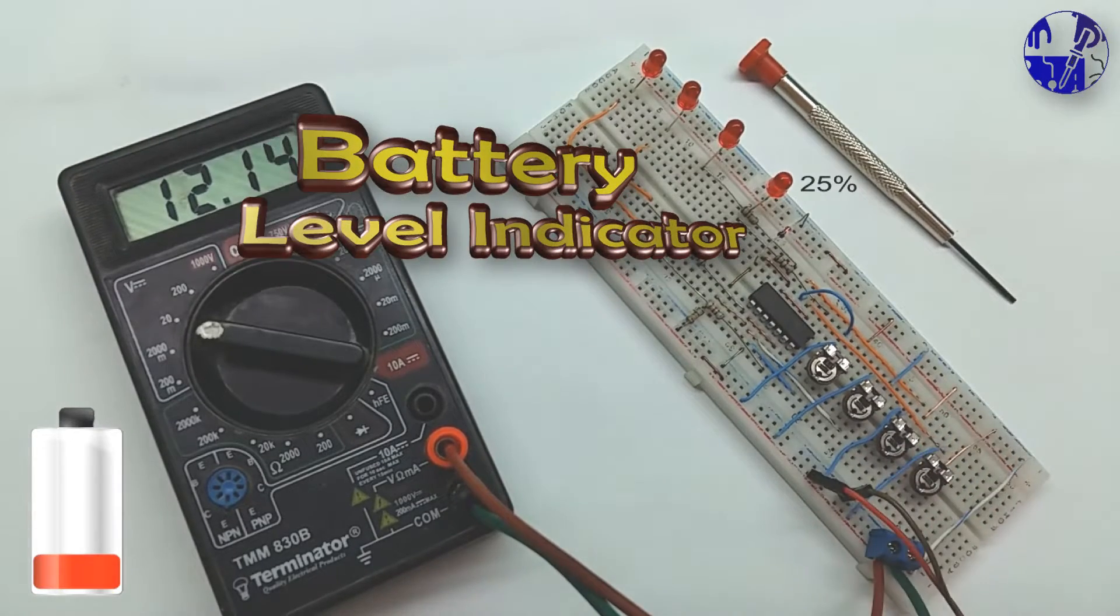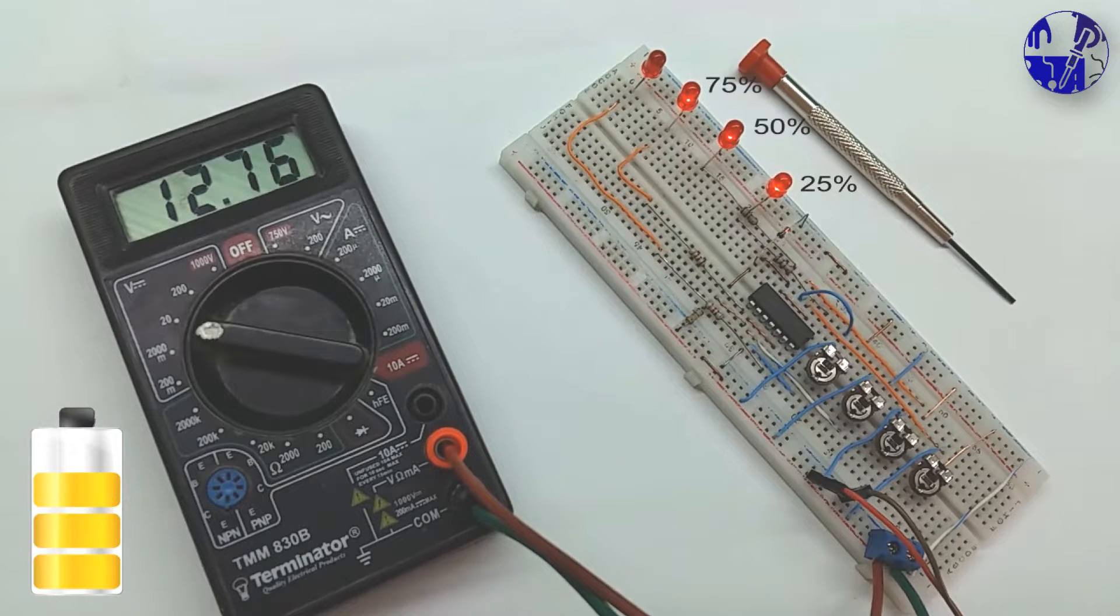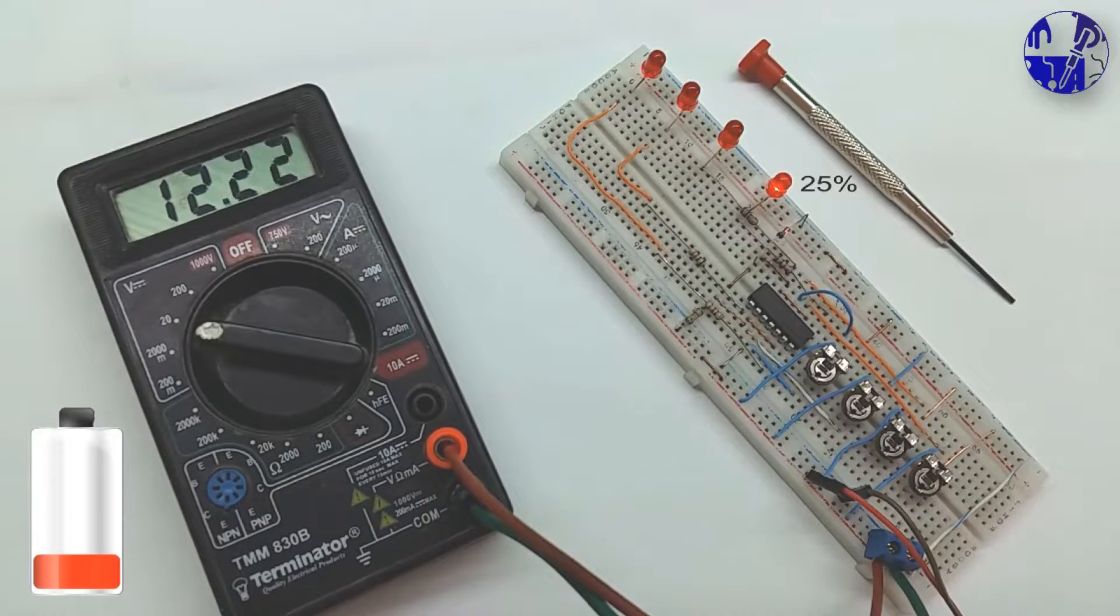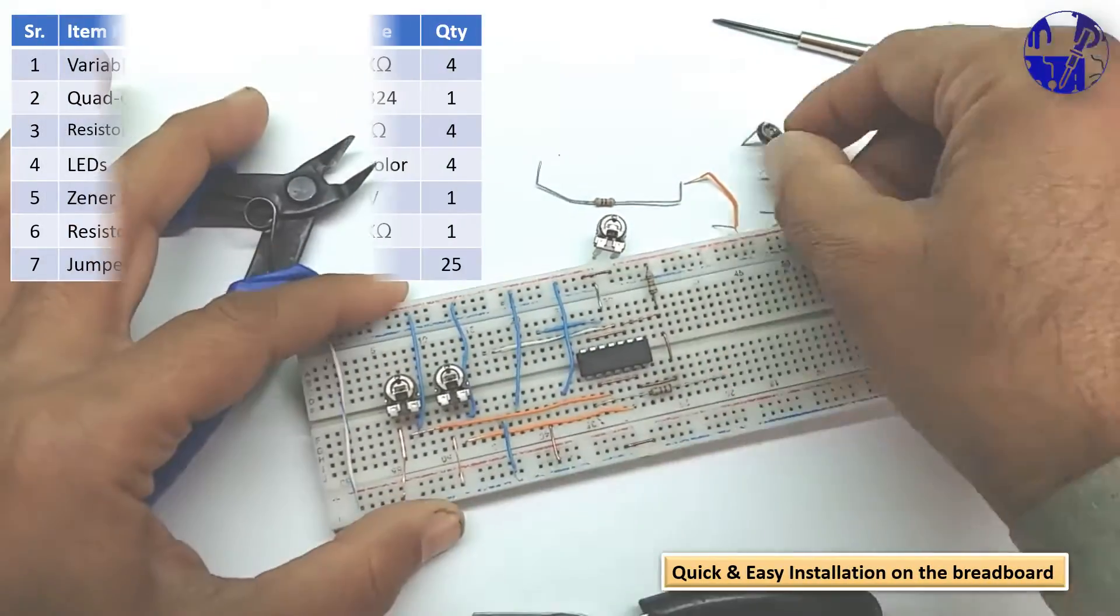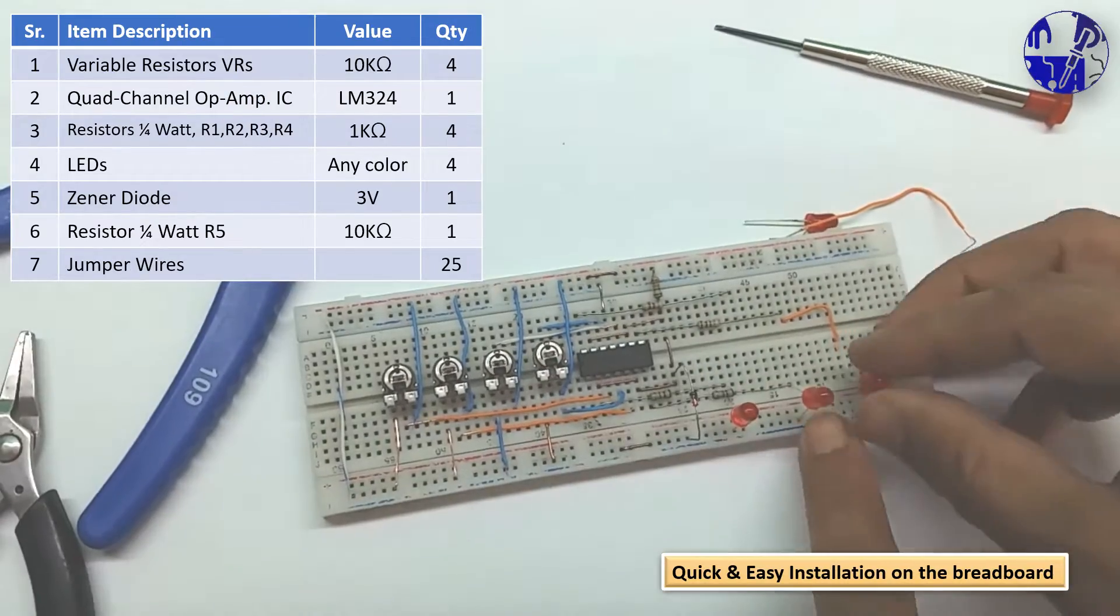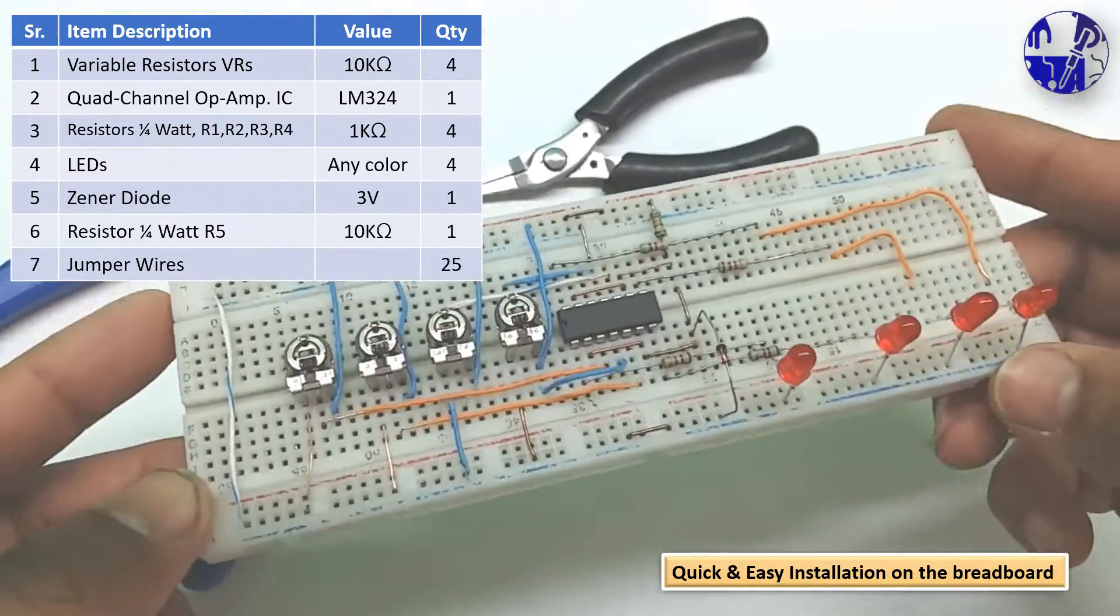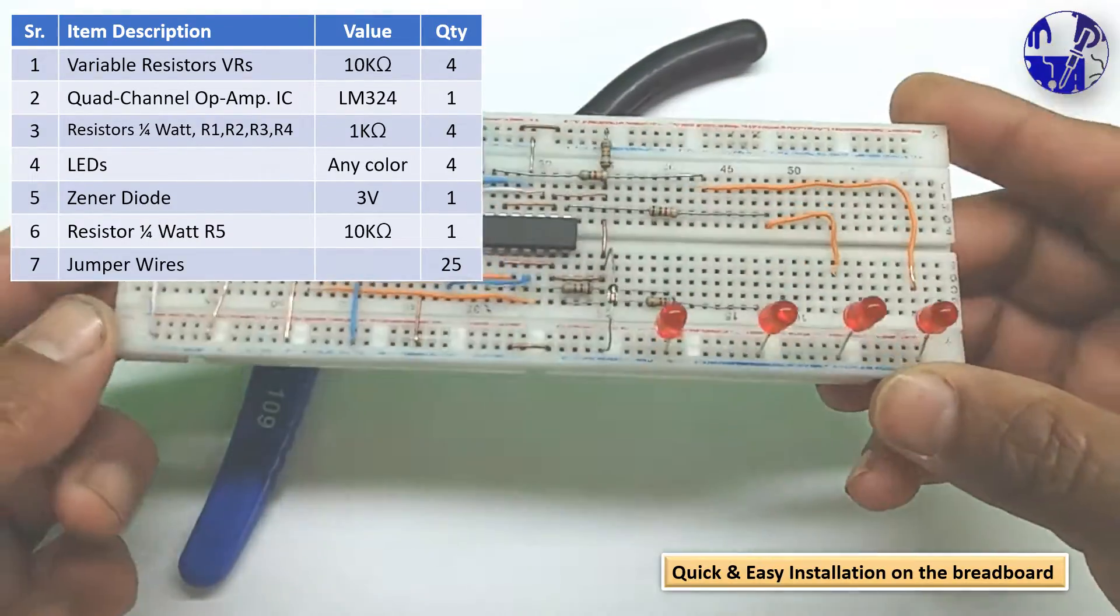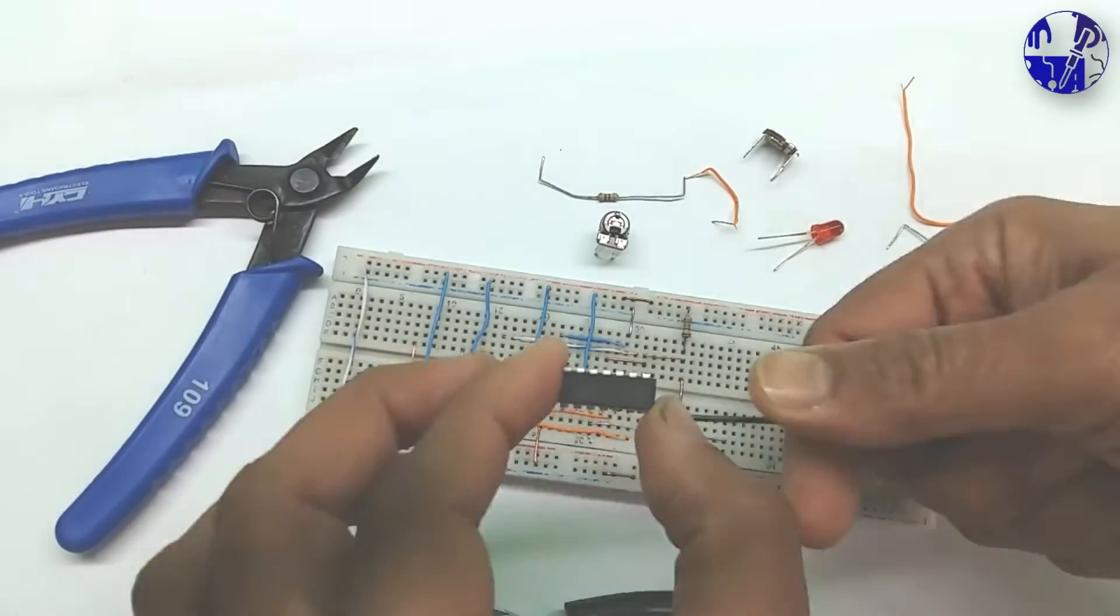In this video I am going to build a battery level indicator circuit. As visual indicators for different voltage levels, we will utilize four LEDs. This project will be assembled on the breadboard. All components used in this project are readily available and cost-effective in the market.